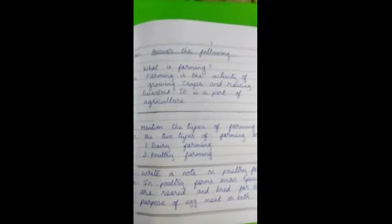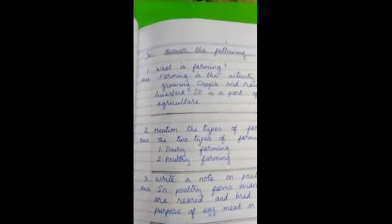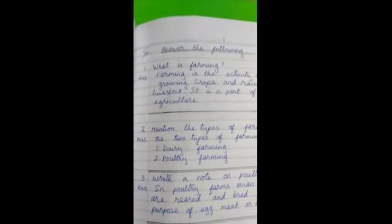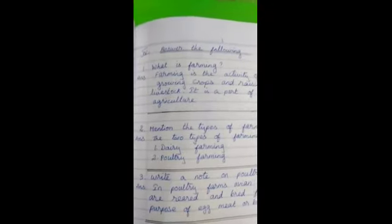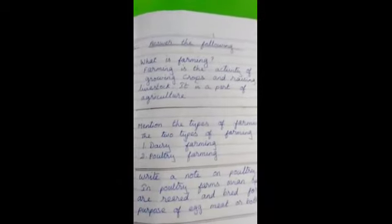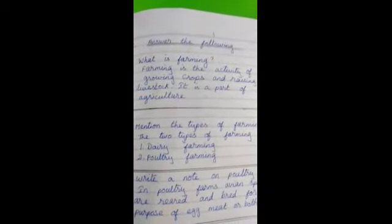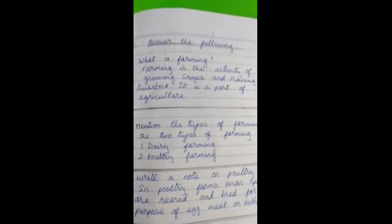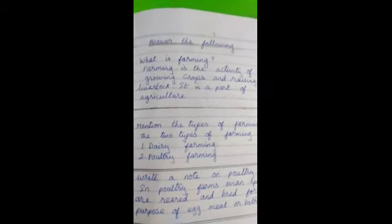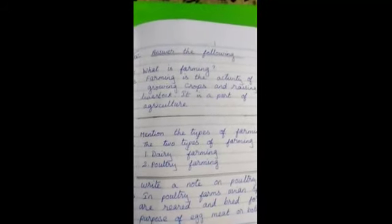And then turn the page. Roman numeral 4, answer the following. Put the lines in answer the following. Leave one line. Put number one. What is farming? The first question. Answer, farming is the activity of growing crops and raising livestock. It is a part of agriculture. You have finished writing it up?